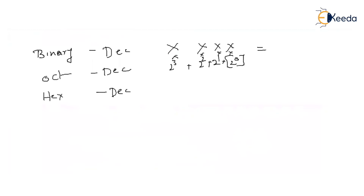If there is a binary point, the weights after it are 2^(−1), 2^(−2), 2^(−3). Multiply corresponding digits by their weights and add them — that converts binary to decimal.